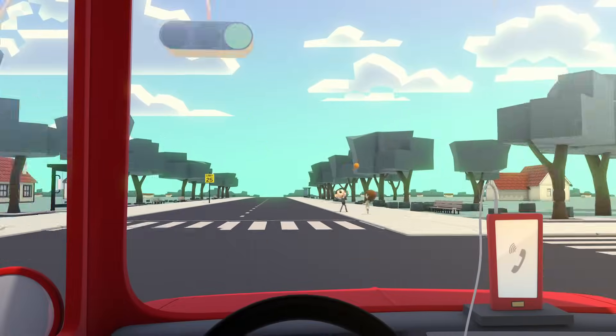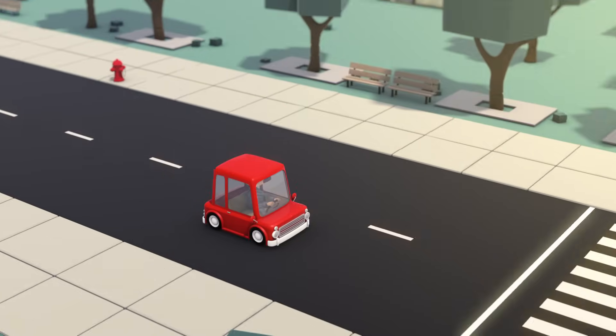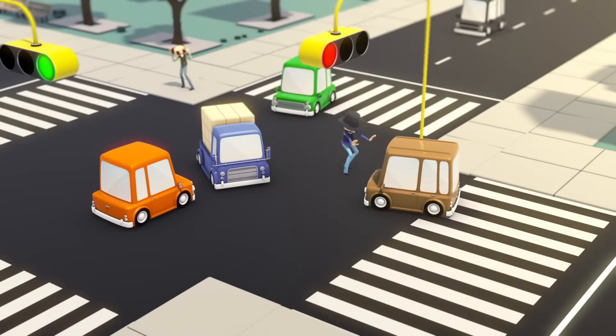So billboards, cars, kids playing, even stop signs and red lights can pass us by unnoticed.